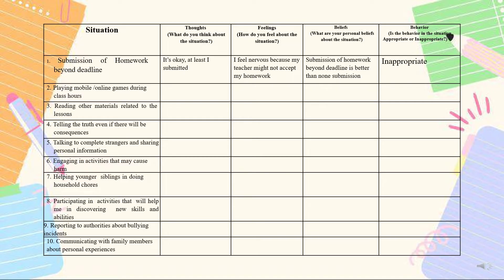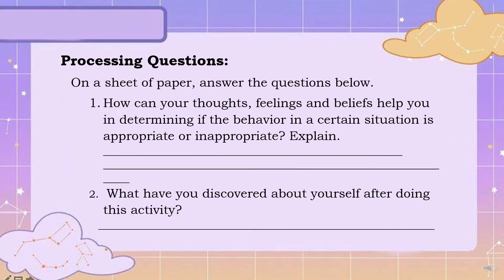Here is the table that will serve as your guide. Situation 1 is the given example: submission of homework beyond deadline. Thoughts — what do you think about the situation? Feelings — how do you feel about the situation? Example: I feel nervous because my teacher might not accept my homework. Beliefs — what are your personal beliefs about the situation? Example: Submission of homework beyond deadline is better than non-submission. Behavior — is the behavior in this situation appropriate or inappropriate? Answer: Inappropriate. After finishing the activity, answer these two processing questions: 1. How can your thoughts, feelings, and beliefs help you in determining if the behavior in a certain situation is appropriate or inappropriate? Explain. 2. What have you discovered about yourself after doing this activity?